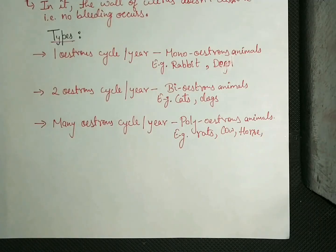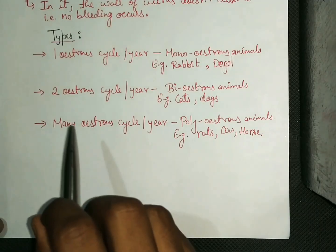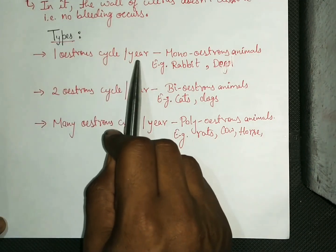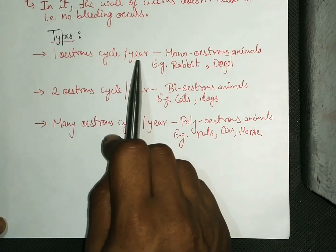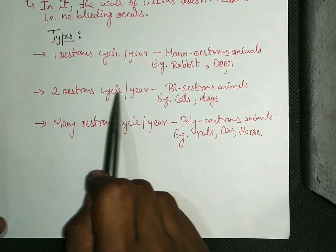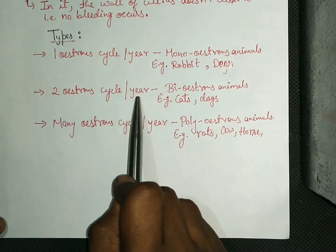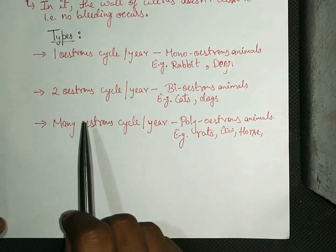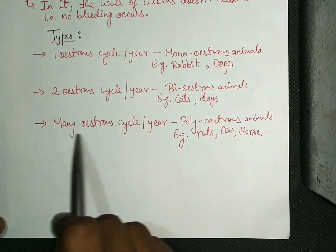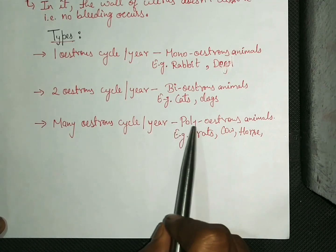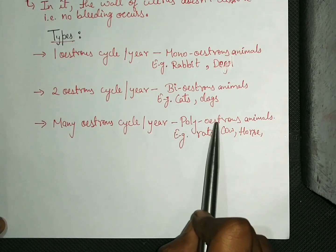Animals can be classified on the basis of their estrus cycle: if one estrus cycle per year occurs, the animals are monoestrus. If two estrus cycles per year occur, they are biestrus or diestrus animals. If many estrus cycles per year are found, those animals are polyestrus.